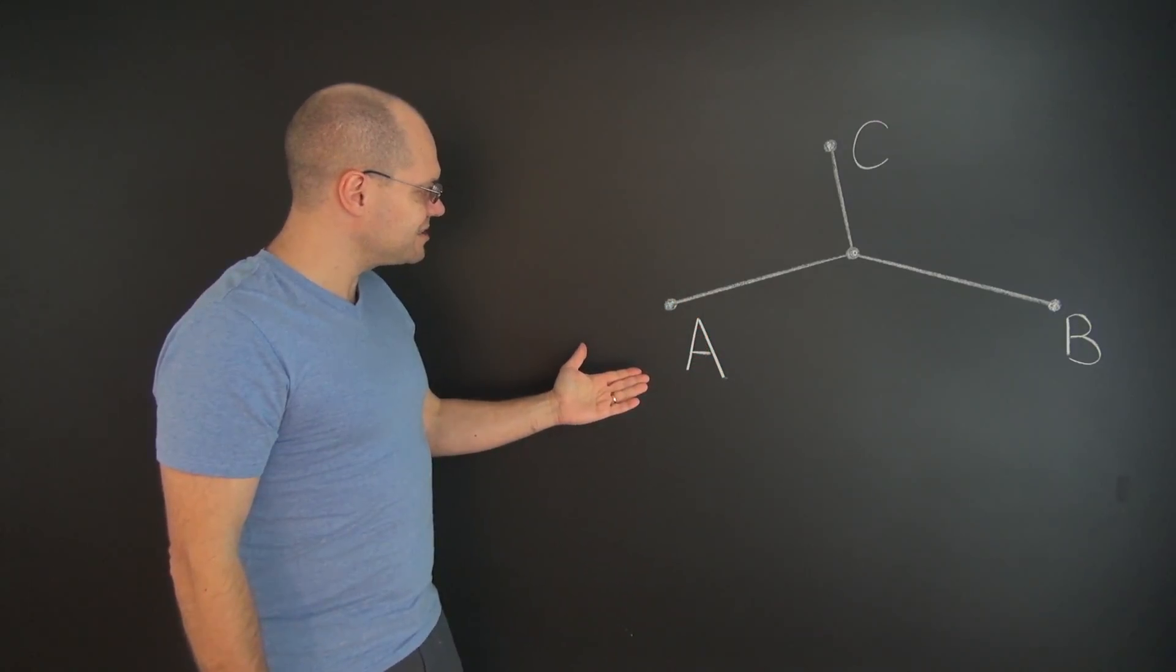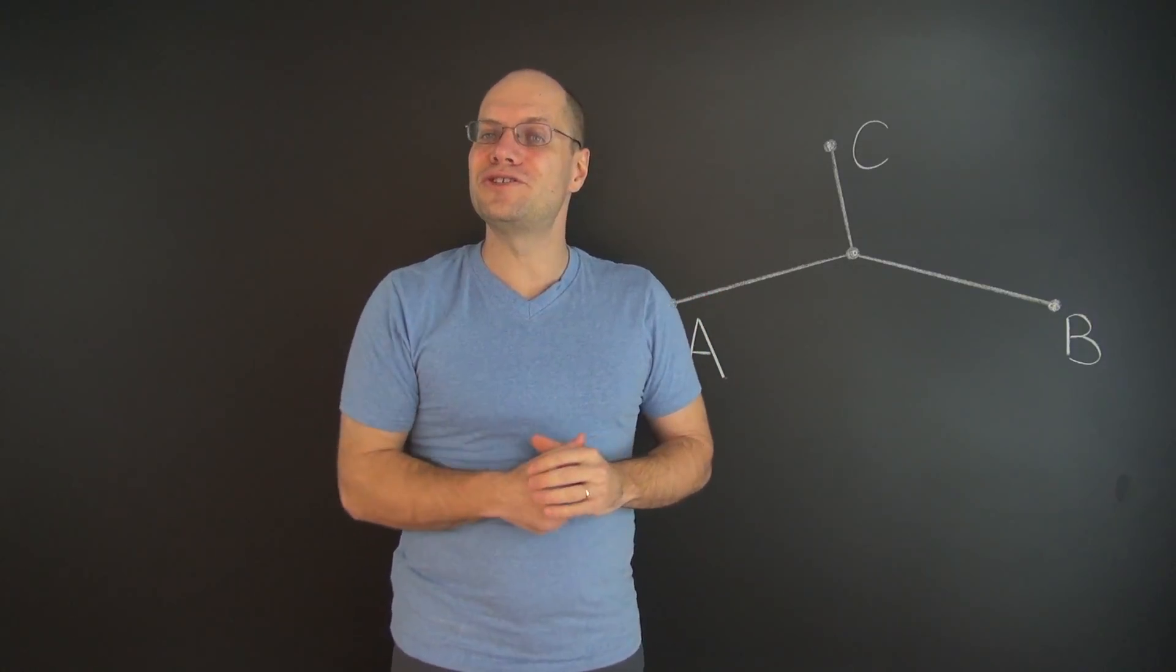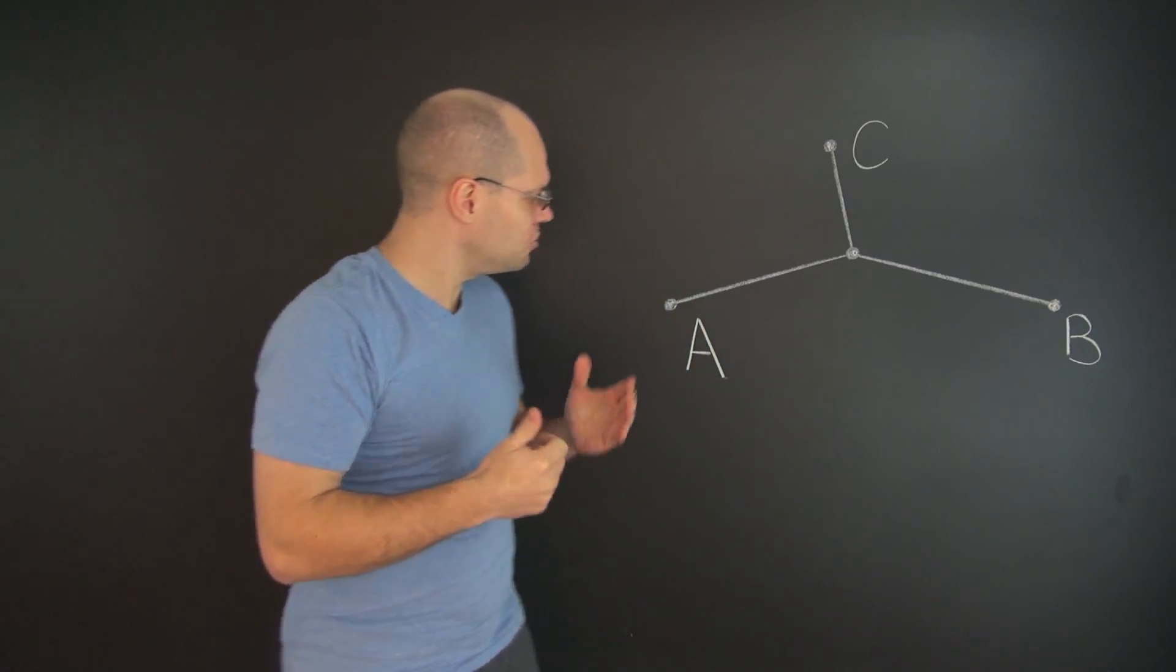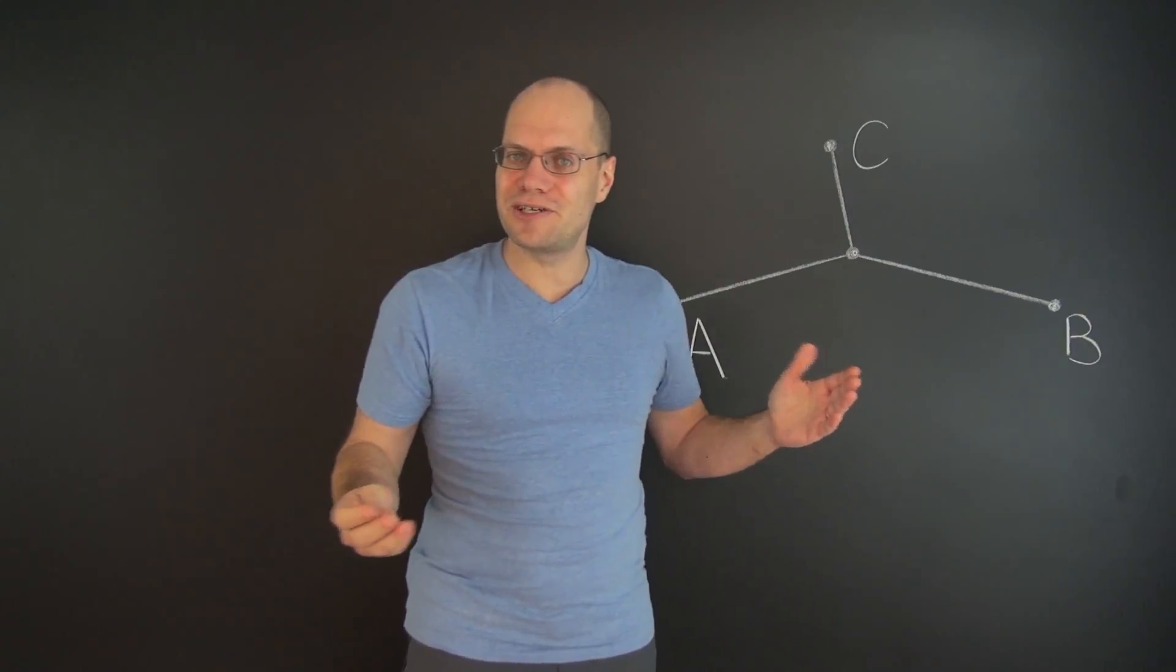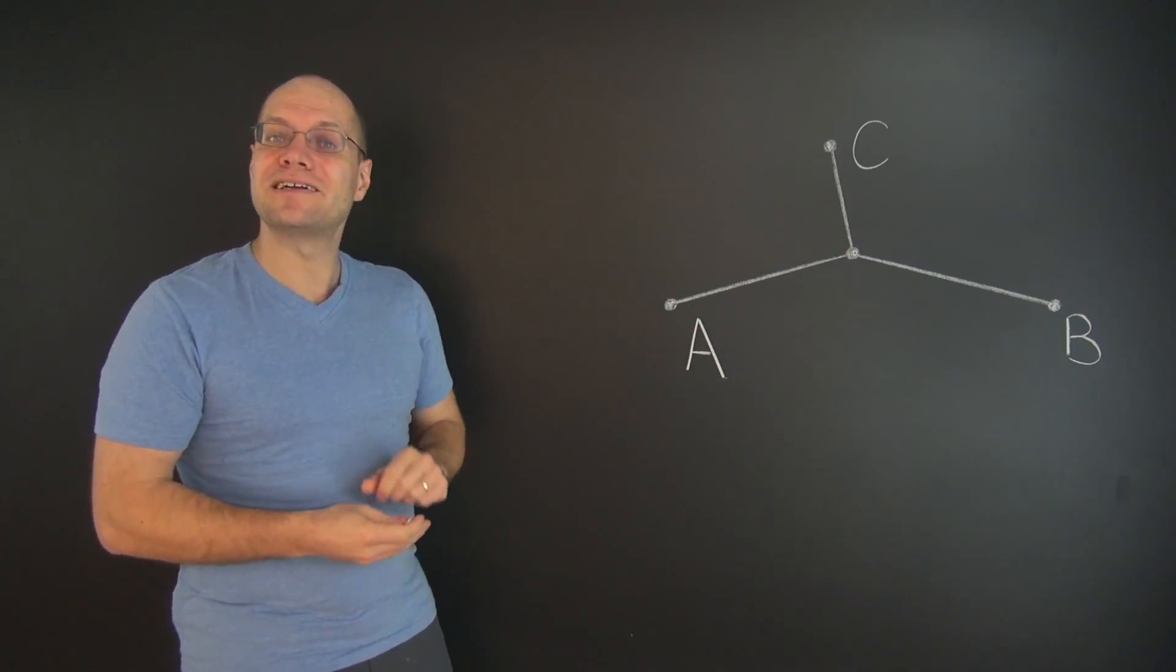But in this case, there is no curve to parameterize. So what we're going to do is introduce one. So let's introduce an arbitrary curve. Could be a straight line, but doesn't have to be a straight line. That passes through the optimal point. Here it is.